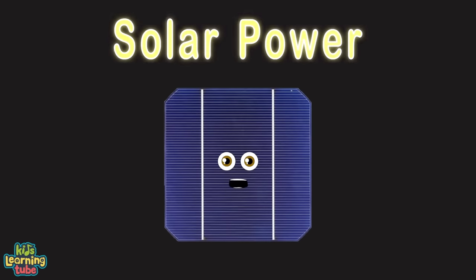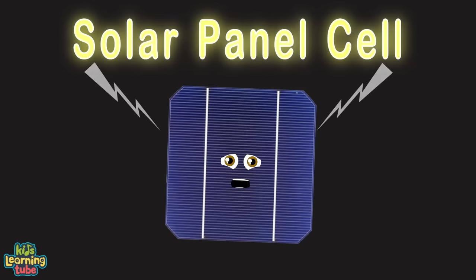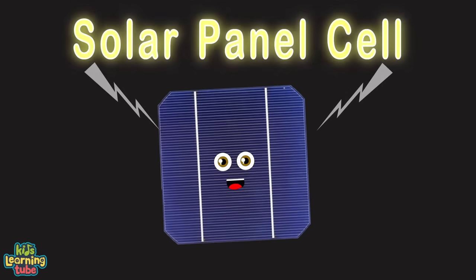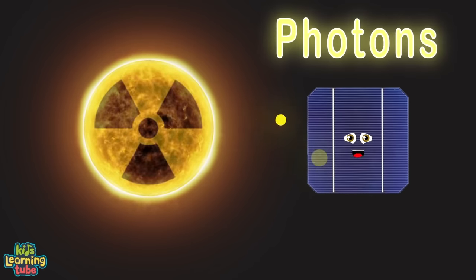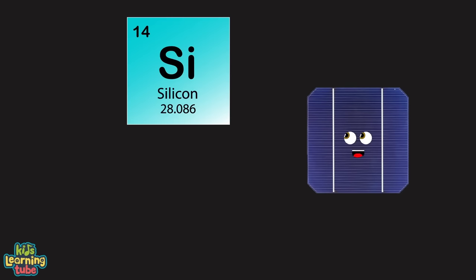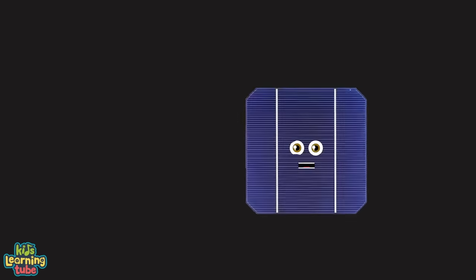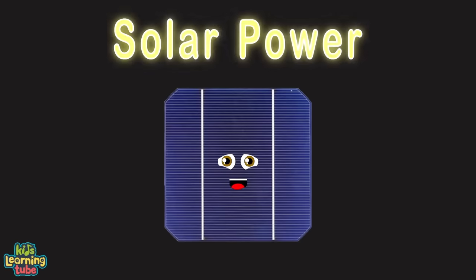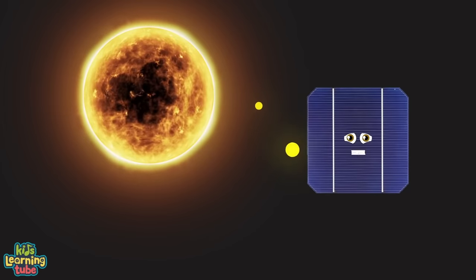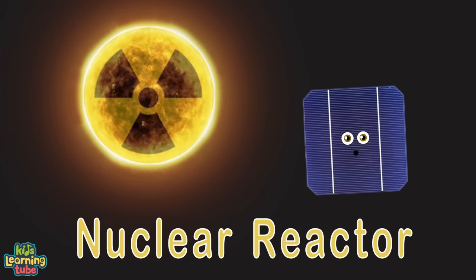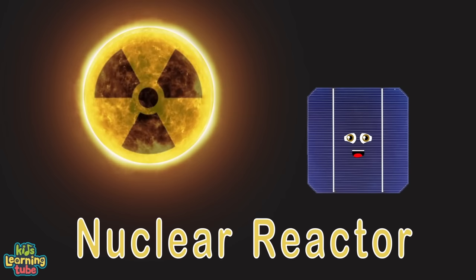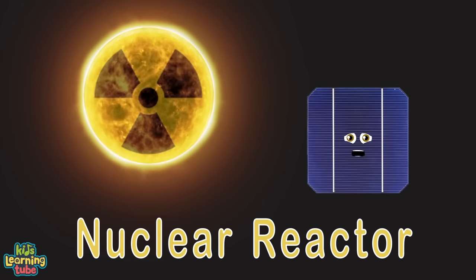This is a solar expedition on renewable energy. We'll see how solar panel cells produce free electricity. Our sun is a nuclear reactor shooting photons at us. Let's harness this power through silicon into batteries. Solar power is the conversion of energy from sunlight into electricity. Our sun is a natural nuclear reactor and the most abundant energy resource on Earth.